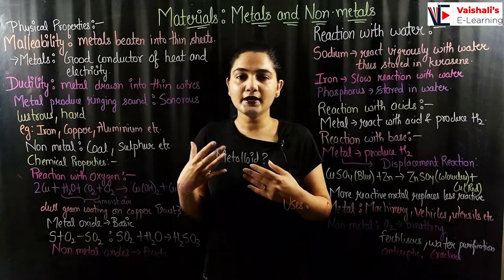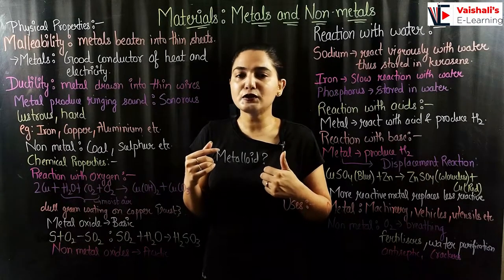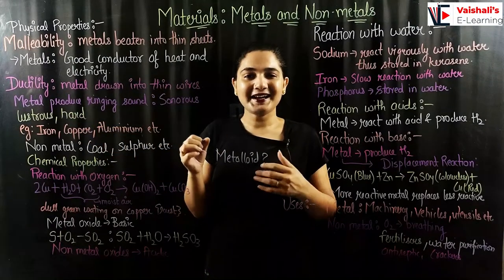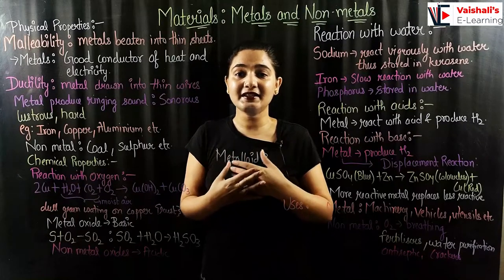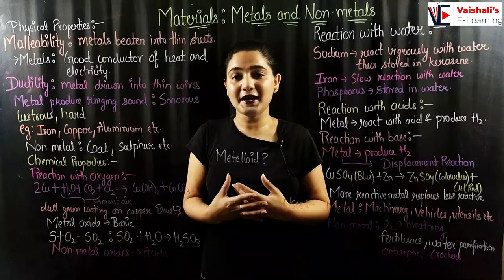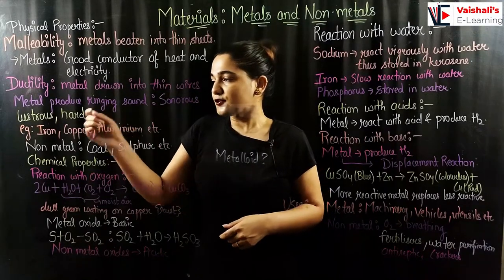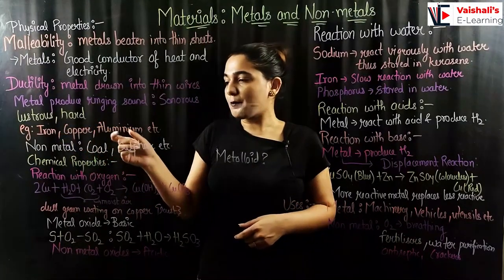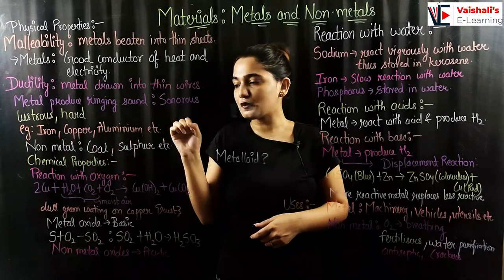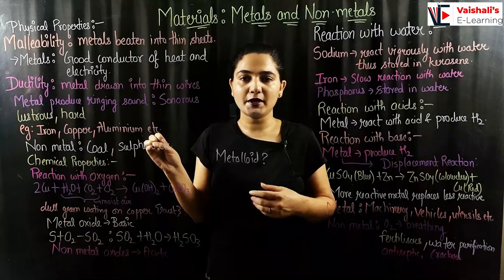Metals are lustrous — they have a shine on them. For example, gold and silver have a shining surface, whereas carbon and sulfur have no shine. Metals are also hard and cannot be broken down easily. Bridges are made of iron and automobiles are made of metals because of this hardness. Examples of metals include iron, copper, and aluminium; examples of non-metals include coal and sulfur.